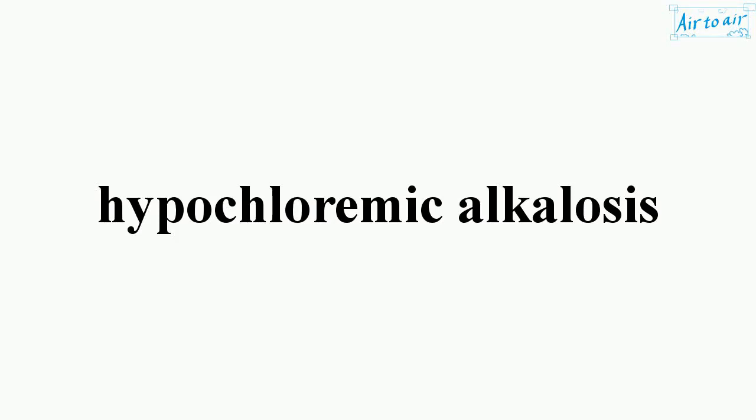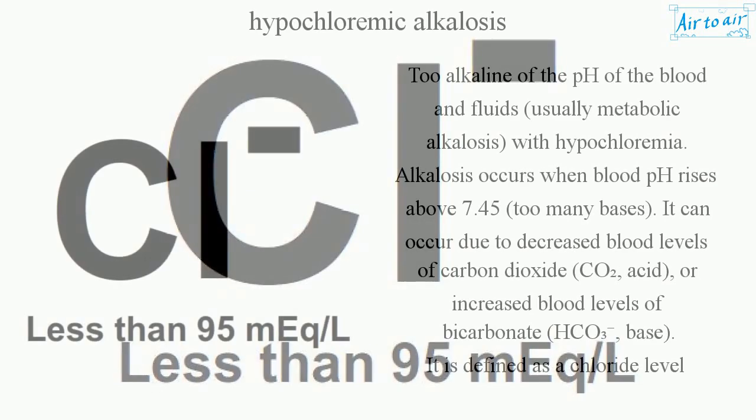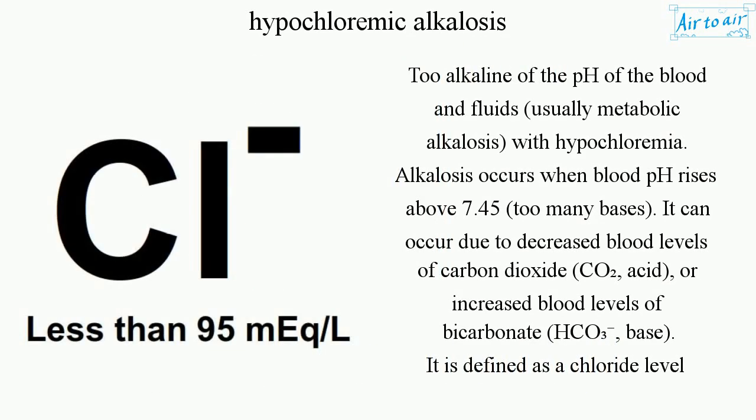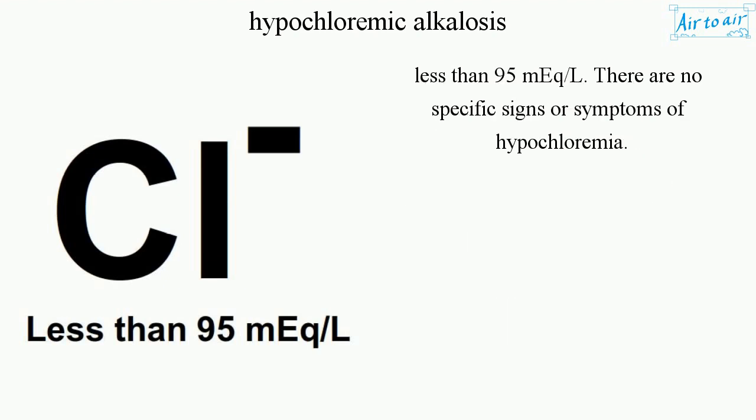Hypochloremic alkalosis refers to an alkaline pH of the blood and fluids, usually metabolic alkalosis with hypochloremia. Alkalosis occurs when blood pH rises above 7.45, meaning too many bases. It can occur due to decreased blood levels of carbon dioxide (CO₂, an acid) or increased blood levels of bicarbonate (HCO₃⁻, a base). It is defined as a chloride level less than 95 mEq/L.